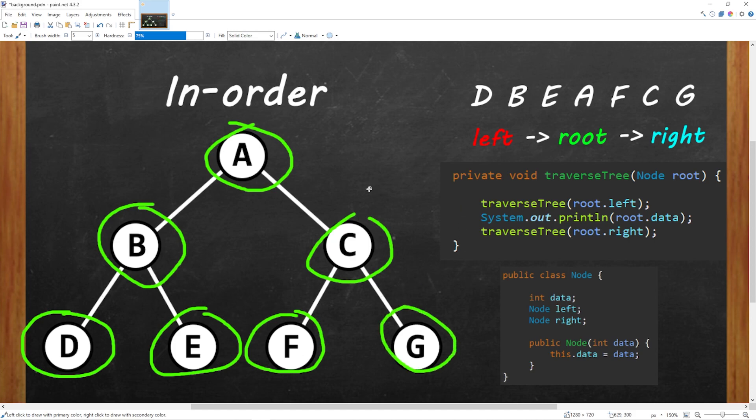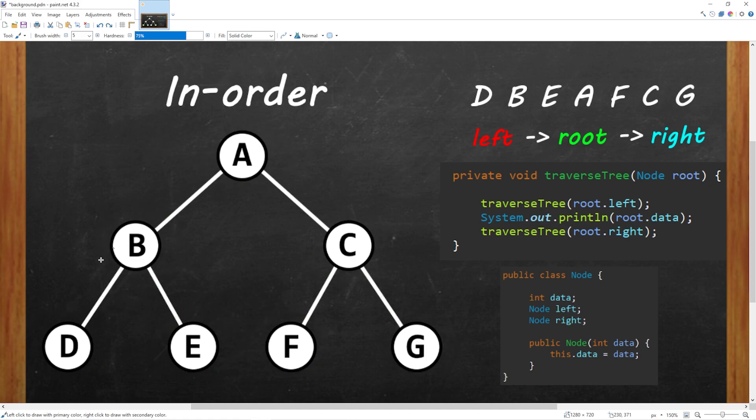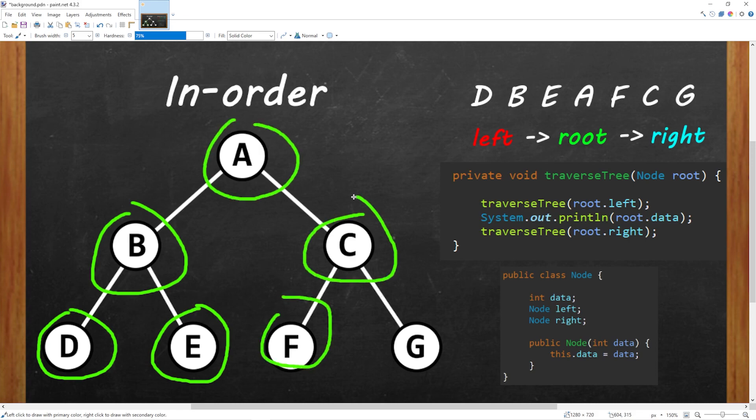When used in the context of a binary search tree, we will visit all of these nodes in non-decreasing order. So again, that was D, B, E, A, F, C, G. We go left, root, right. And here's that method again.